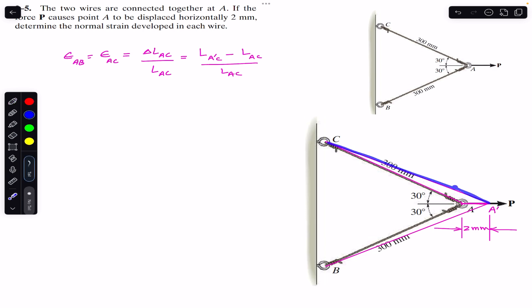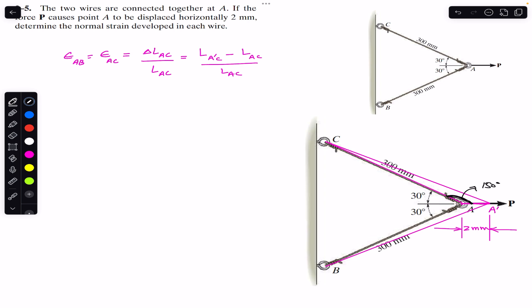L_A'C is the length of wire AC after the displacement of 2 mm. We just need to find L_A'C. We can use this triangle and apply the law of cosines. As you can see, this angle is 30 degrees, so the supplementary angle is 150 degrees. So this angle here is 150 degrees.